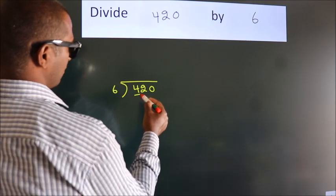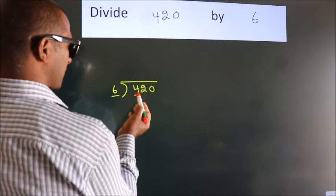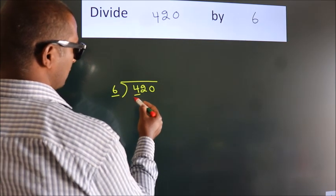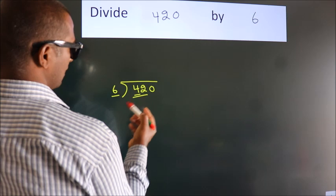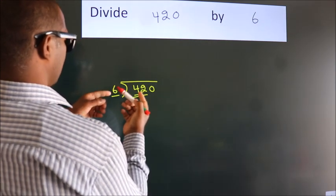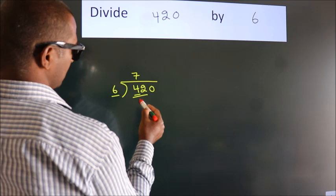here we have 4, here 6. 4 smaller than 6. So we should take two numbers, 42. When do we get 42? In 6 table, 6 7s, 42.